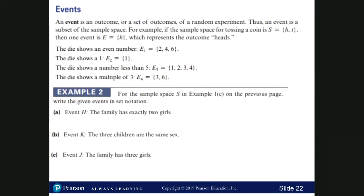An event is an outcome or a set of outcomes of a random experiment. Thus, an event is a subset of a sample space. We've been working with sets and subsets, and each event is a subset of the sample space. For example, the sample space for tossing a coin is heads or tails, and the event of getting heads represents a subset of the sample space.